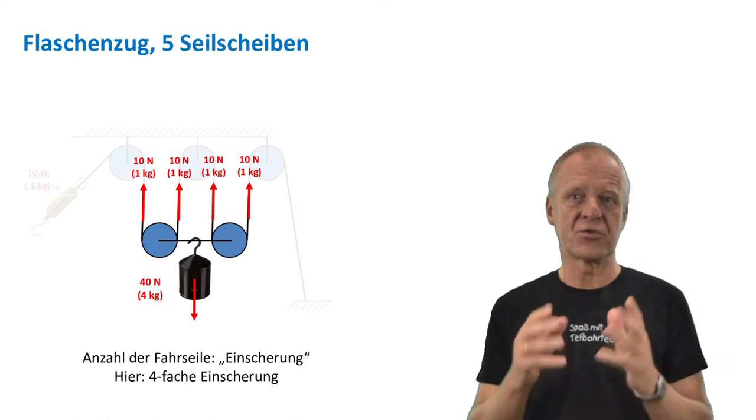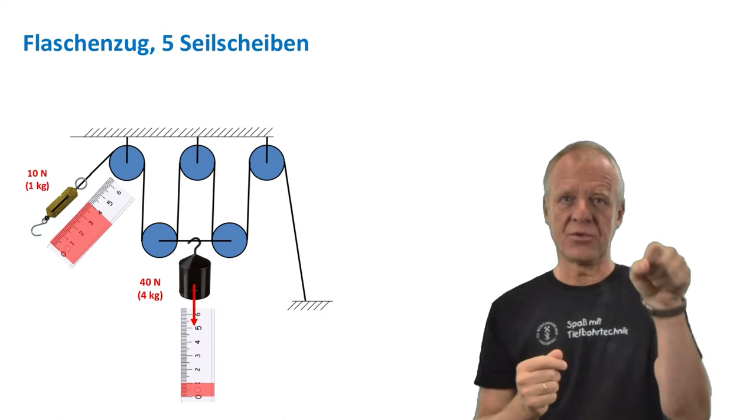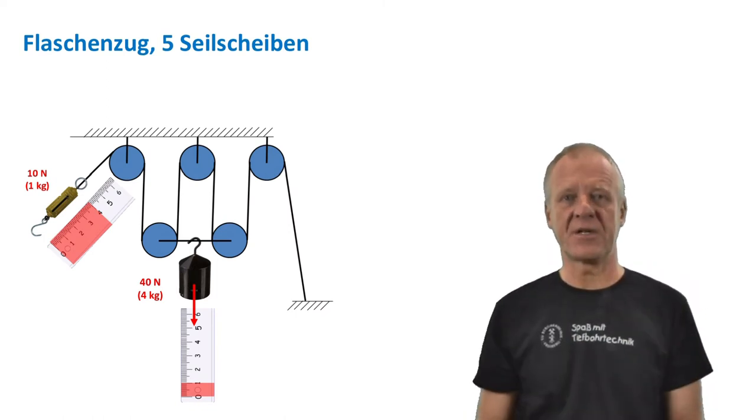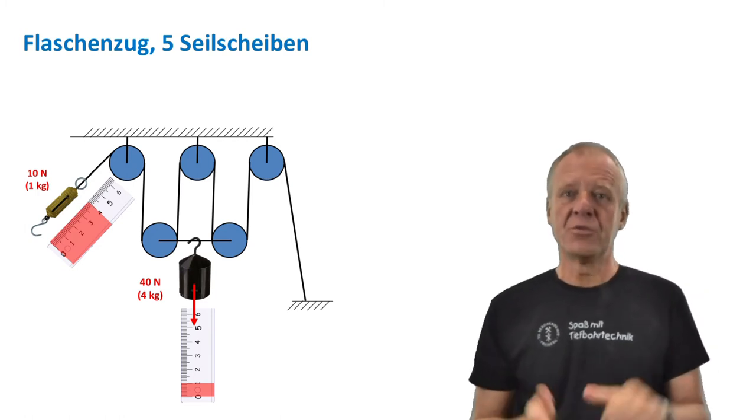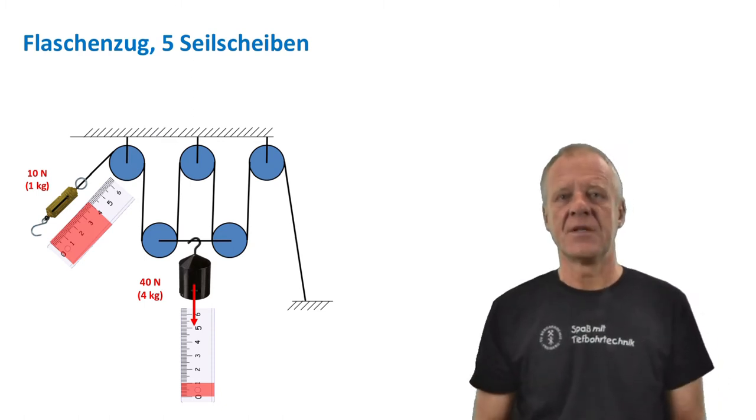The four-fold adjustment divides the weight between the four ropes. So with 10 newtons of pulling force this time, I can lift four times as much weight. But I also have to cover four times more distance of the fast line. So four meters pull will only lift the weight one meter high.